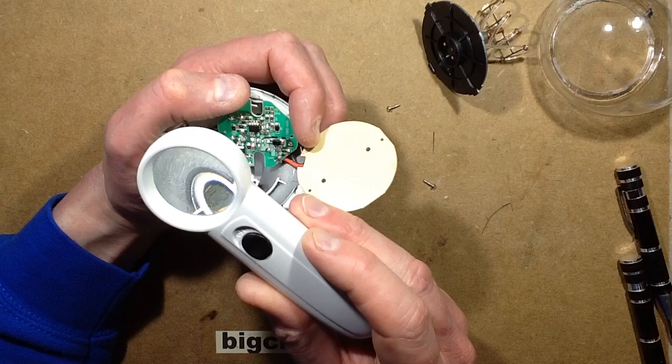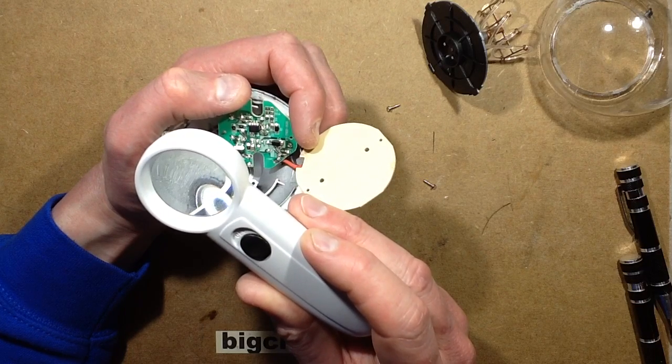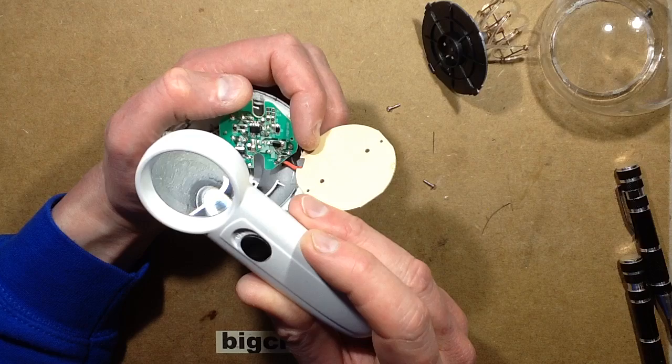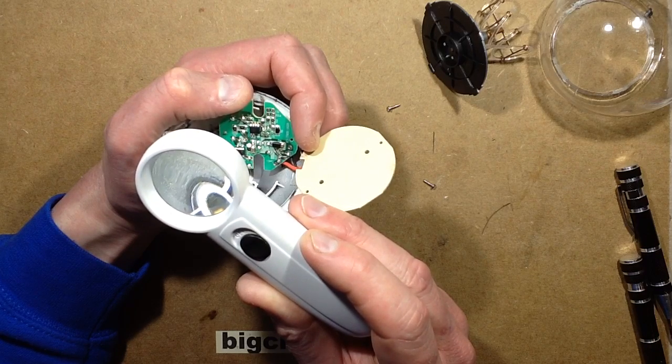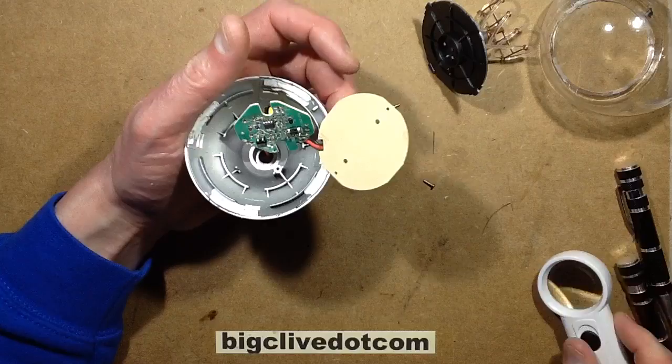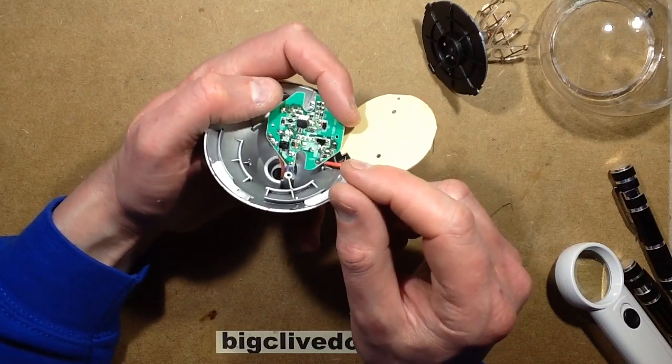There is another code underneath, TB 1527. That could be a manufacturing date, 27th week of 2015. Okay, right, I think this merits a little more investigation.